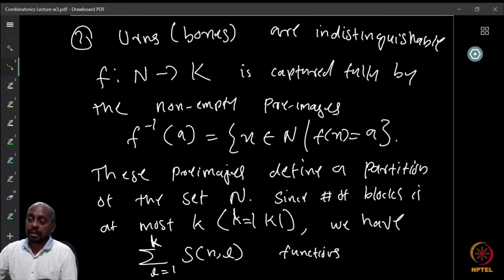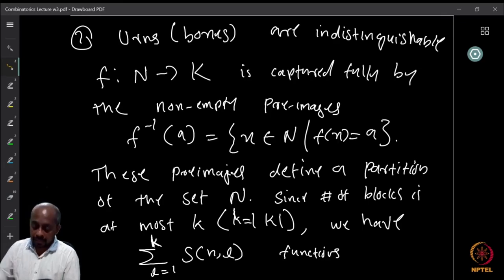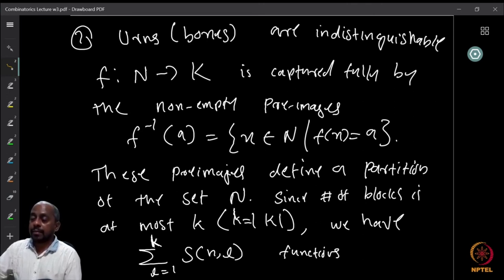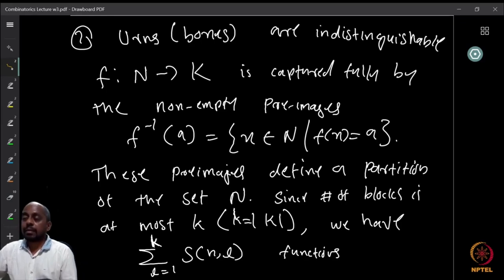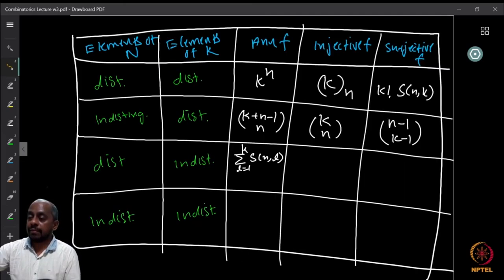So the seventh entry is the number of ways of partitioning the set N into at most k blocks, which is the sum from l=1 to k of S(n, l) — that is S(n,1) + S(n,2) + ... + S(n,k).